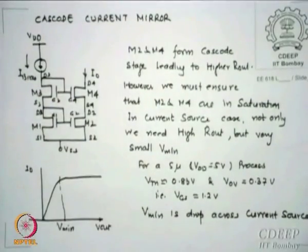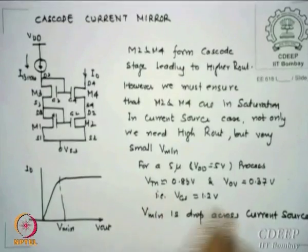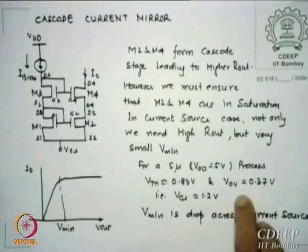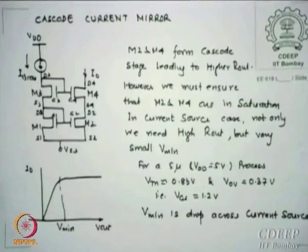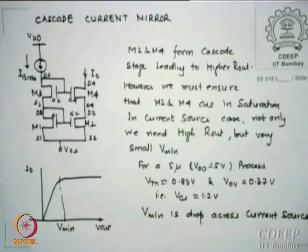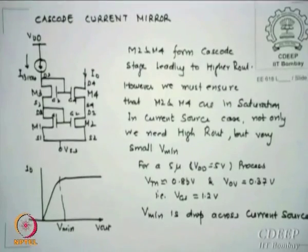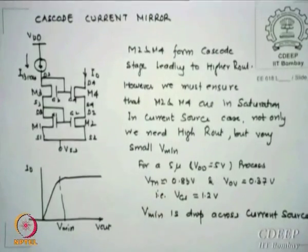Vmin is the minimum drop at the output that is allowed. For a typical 5-micron process from Baker's book: Vtn = 0.83 V, overdrive voltage VOV = 0.37 V, giving Vgs = 1.2 V. Please remember Vgs = Vt + VOV: if Vt is 0.83 and VOV is 0.37, Vgs must be 1.2 V. We want to figure out the minimum drop across the current source for this data.